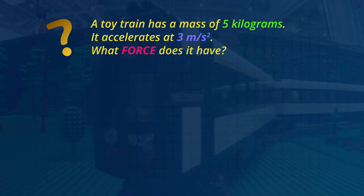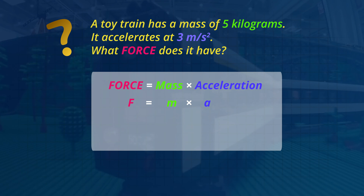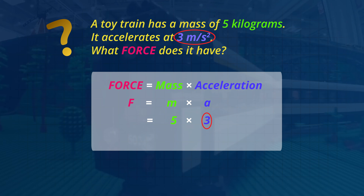Now for the rule. Force equals mass multiplied by acceleration. The mass is 5 kilograms and the acceleration is 3 meters per second squared. So the force is 15 Newtons.